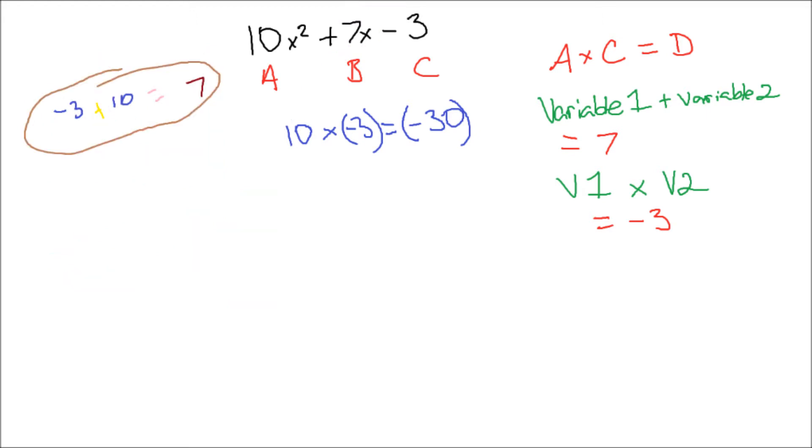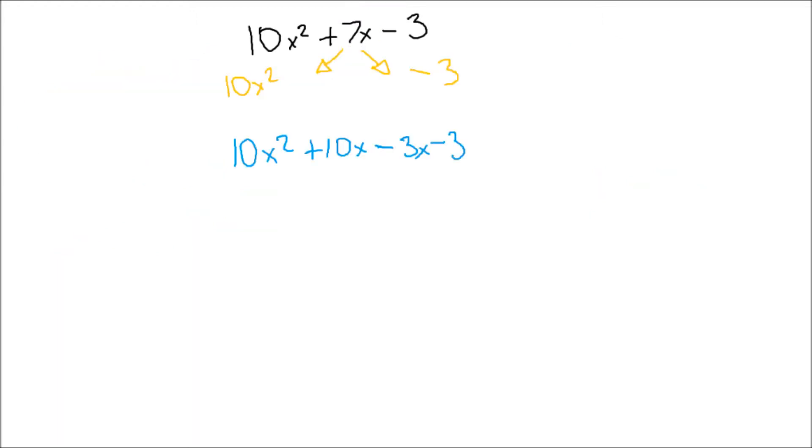The next thing to do is fairly easy. You just separate the positive 7 into the positive 10 and negative 3, making the equation as shown. The order of the separated numbers does not matter, as long as they are between A and C.